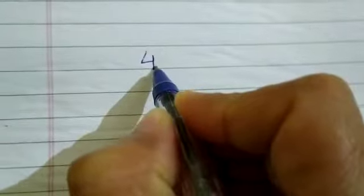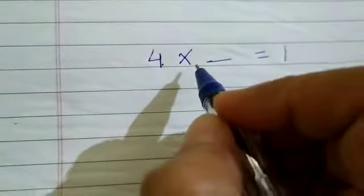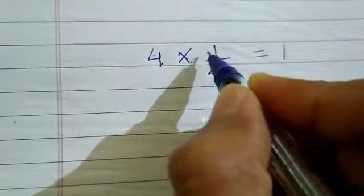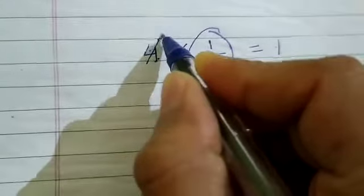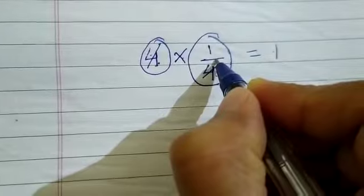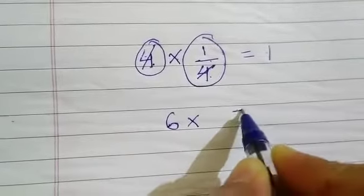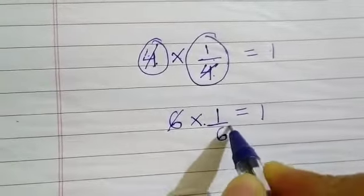Another example: take 4. We have to multiply 4 by a number such that we get the answer 1. Which number should we multiply with 4? The answer is 1 upon 4. If we multiply 4 with 1 upon 4, the 4s get cancelled and we get 1. So 1 upon 4 is the multiplicative inverse of 4, and 4 is the multiplicative inverse of 1 upon 4. Second example: 6. Which number should we multiply 6 by to get 1? It will be 1 upon 6, because 6 and 6 cancel, giving 1. So 1 upon 6 is the multiplicative inverse of 6, and 6 is the multiplicative inverse of 1 upon 6.